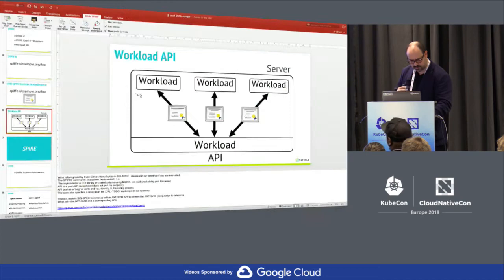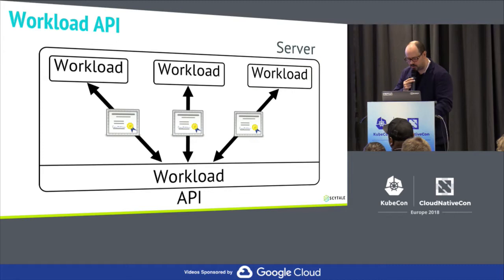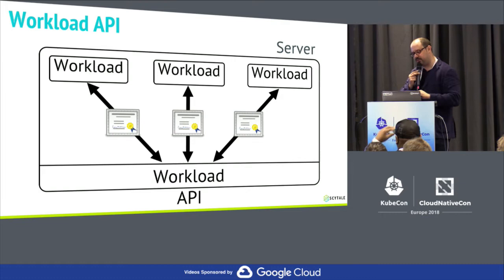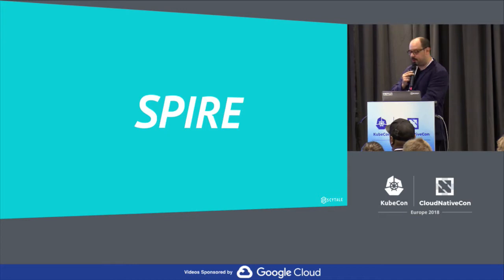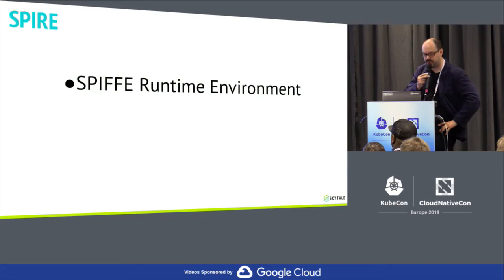We're working right now on the JWT SVID, which would be the next identity document. It would have a JWT SVID spec describing what goes into the JWT, plus the API associated with that. Now, SPIRE is our implementation of the SPIFFE runtime environment — something you can use that implements SPIFFE.